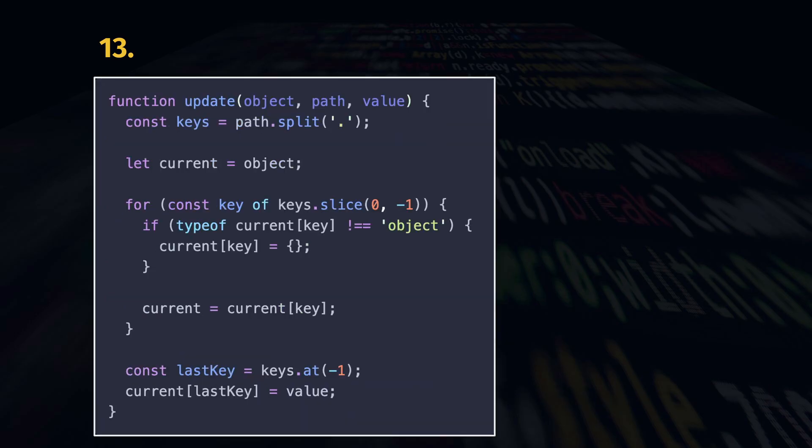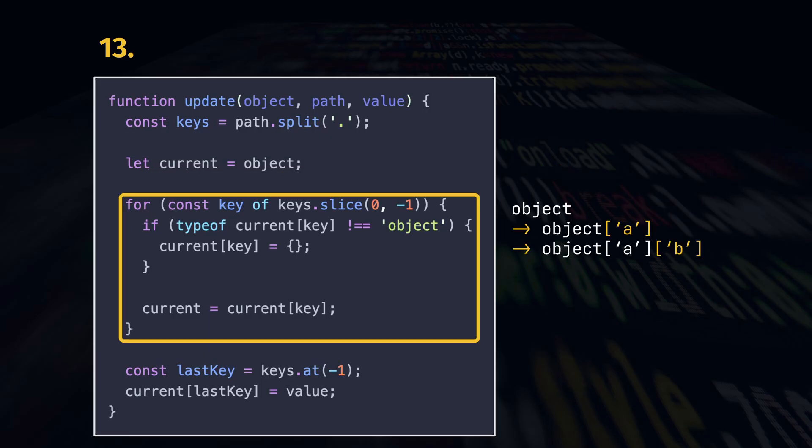Here's an example iterative solution. We split the path by dot to get the keys, for instance A, B, C. Then we start with the original object and keep traversing it through all but the last key so we get to the object A and then to object AB. If the objects don't exist we create them.